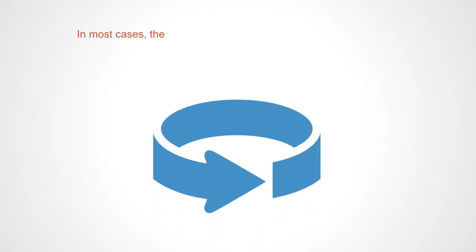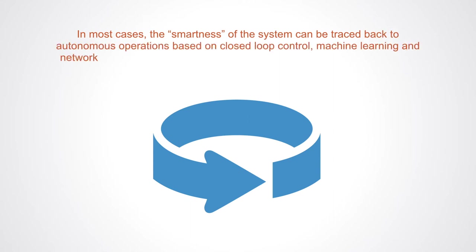In most cases, the smartness of these systems can be traced back to autonomous operations based on closed loop control, machine learning and networking capabilities, that enable the system to exhibit adaptive behavior.